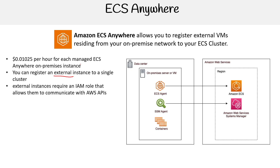External instances require an IAM role that allows them to communicate with the AWS API. It's actually specifically called the IAM Anywhere role, which is a little bit different from the standard IAM roles.